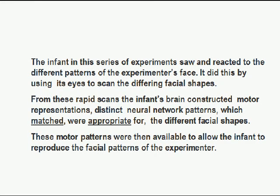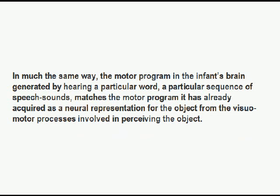The infant in this series of experiments saw and reacted to the different patterns of the experimenter's face. It did this by using its eyes to scan the differing facial shapes in the way described earlier. From these rapid scans, the infant's brain constructed motor representations — distinct neural network patterns — which matched the different facial shapes. These motor patterns were then available to allow the infant to reproduce the facial patterns of the experimenter.